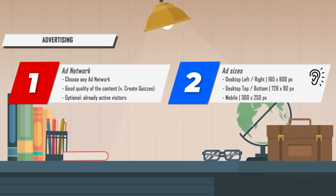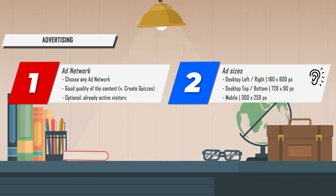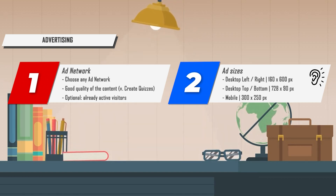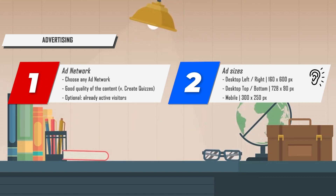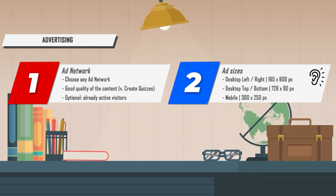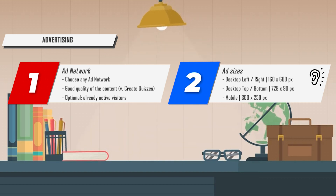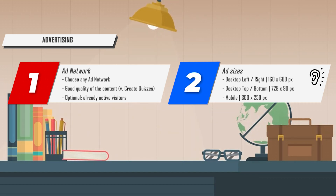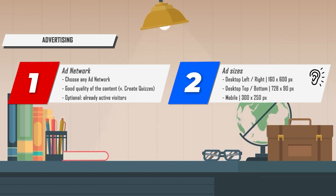If you've chosen an ad network you'll be given ad codes from the ad network. The ad codes are integrated into the advertising settings of the quiz plugin by simply inserting the code into the dedicated column.